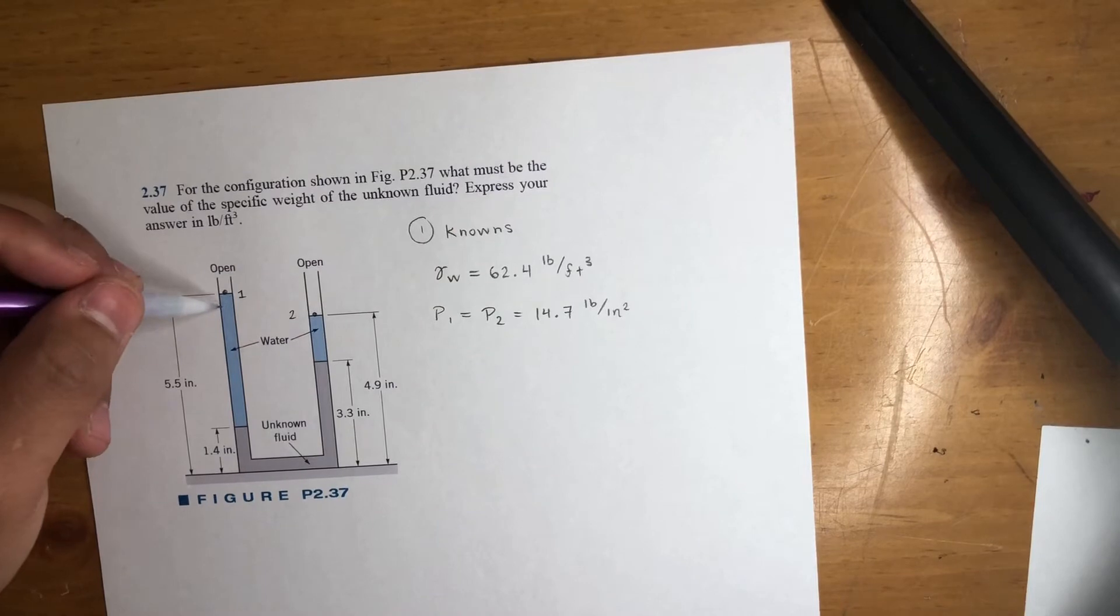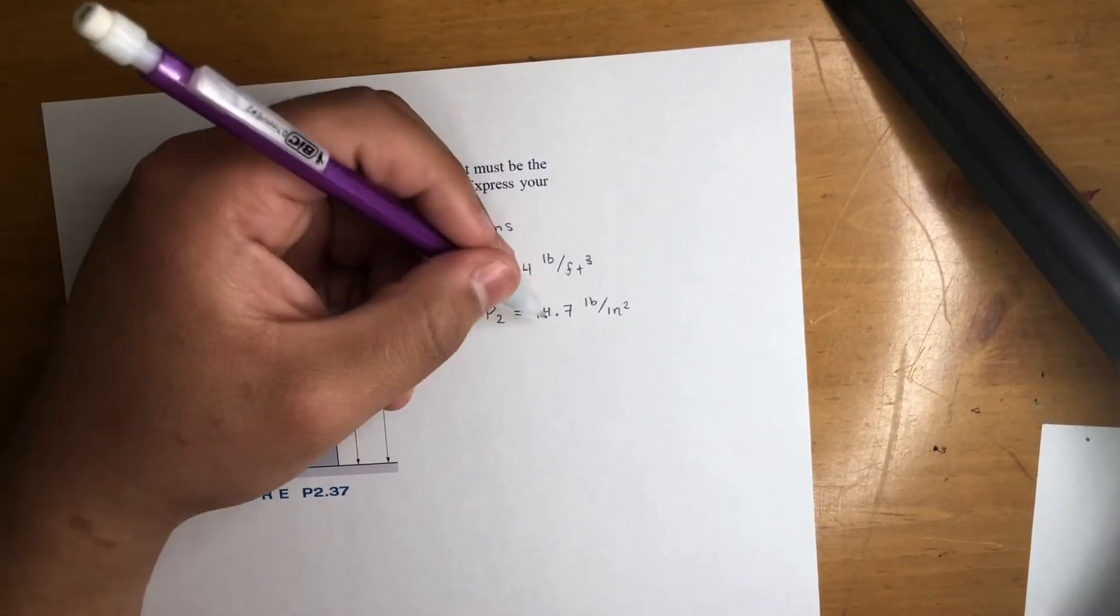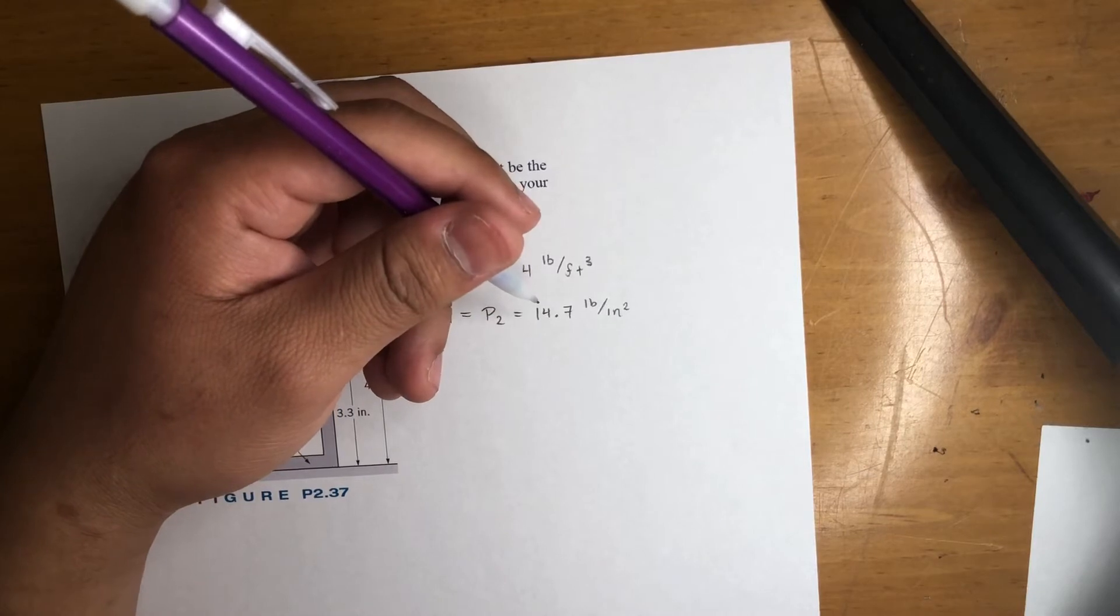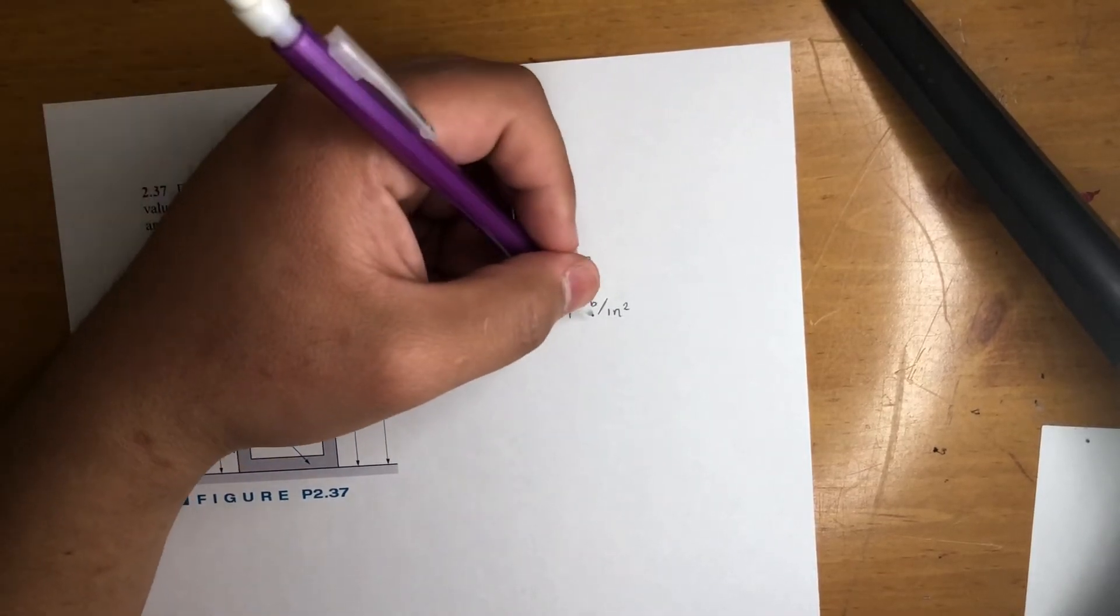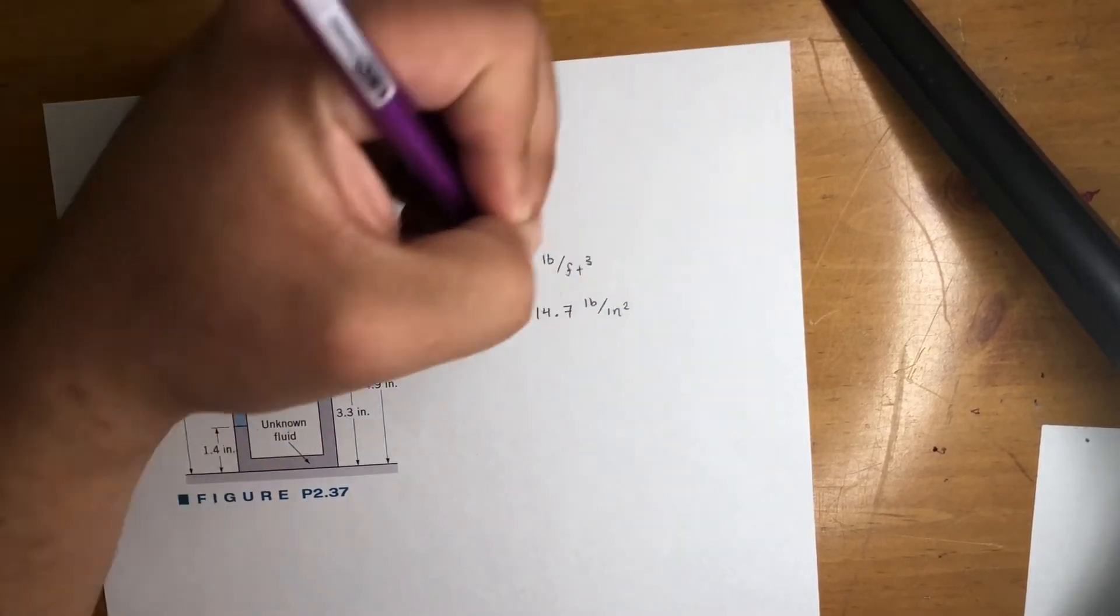At the end of the day they're going to cancel, but just always use 14.7. That's what I'll do, especially if it's open. So that's absolute right there. We're looking for gamma f.